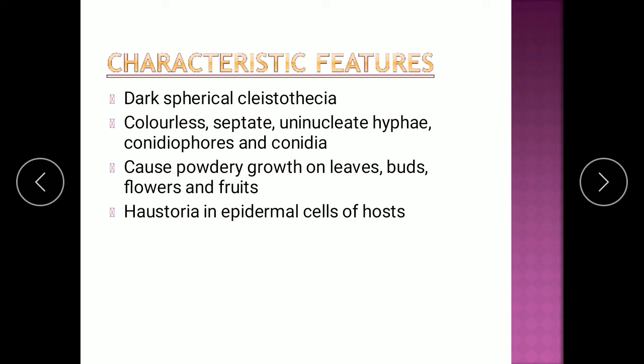All powdery mildews are also characterized by septate, uninucleate hyphae, conidiophores, and conidia, which are the asexual modes of reproduction. These organisms cause powdery growth on the leaves, buds, flowers, and fruits of the plants. To absorb nutrition from the host, they produce haustoria in the epidermal cells of the host. The organism produces a spherical or ellipsoidal haustorium, and it is restricted to the outermost epidermal layer of the plant — it does not penetrate further.